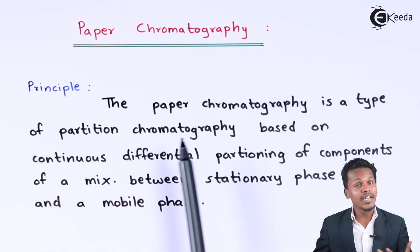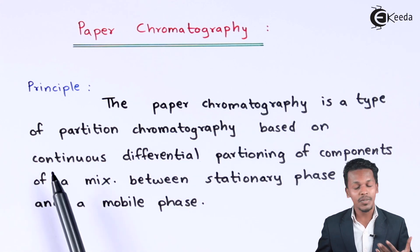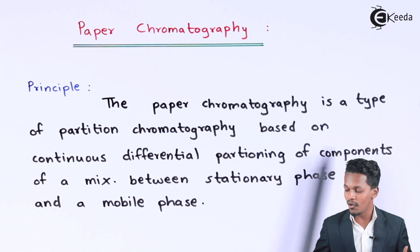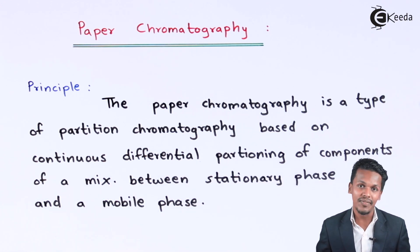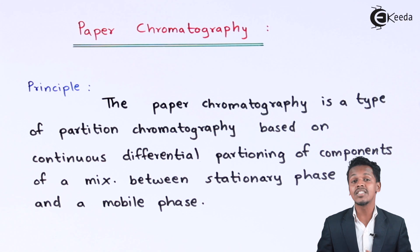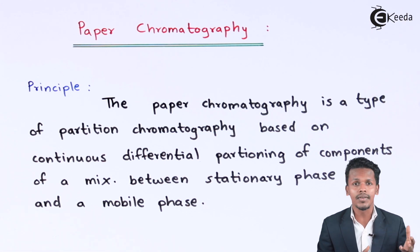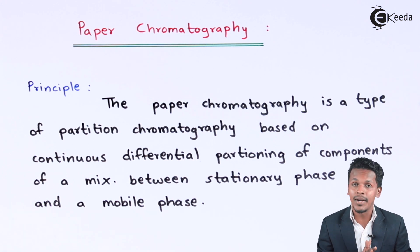Paper chromatography is a type of partition chromatography which is based on the principle of continuous differential partitioning of components of a mixture between a stationary phase and a mobile phase. This is somewhere different compared to column chromatography — the technique as well as the principle behind this differs from column chromatography.